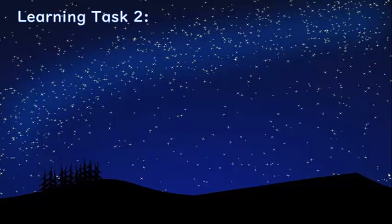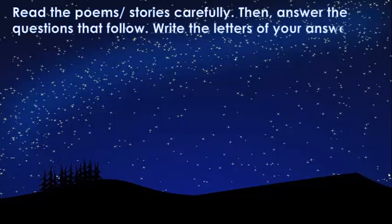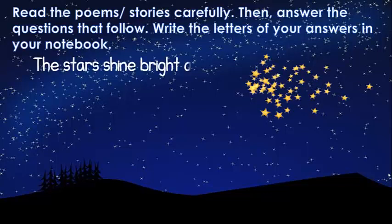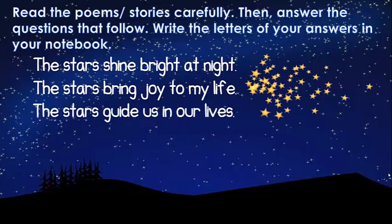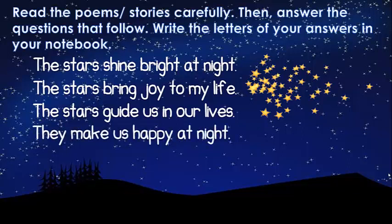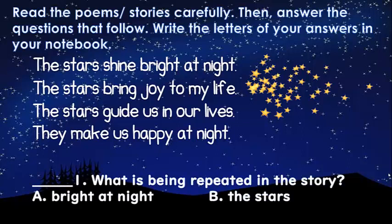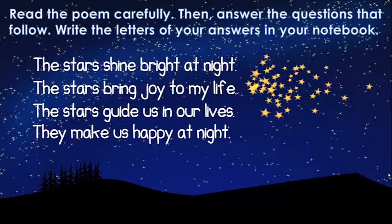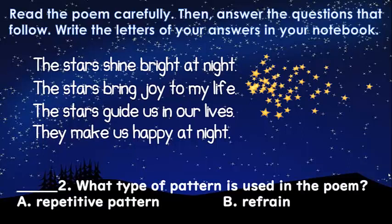Let's move forward to learning task number two. Read the poems or short stories carefully, then answer the questions that follow. Write the letters of your answers in your notebook. The stars shine bright at night. The stars bring joy to my life. The stars guide us in our lives. They make us happy at night. What is being repeated in the story? A. Bright at night. B. The stars. Perfect — letter B, the stars. Number two: What type of pattern is used in the poem? A. Repetitive pattern. B. Refrain. Correct — it's repetitive pattern.